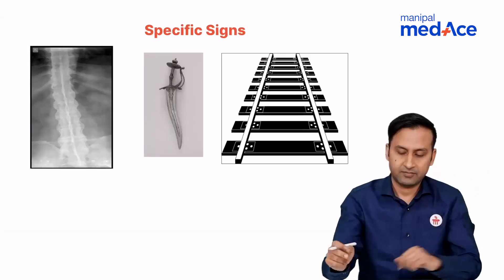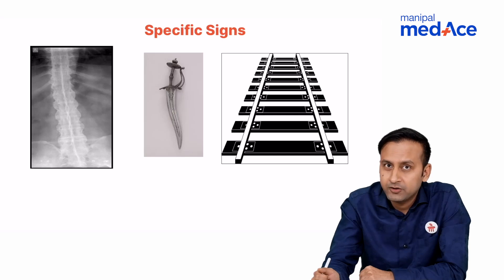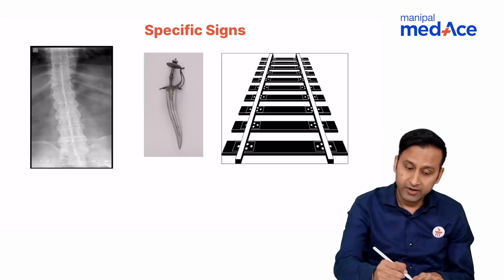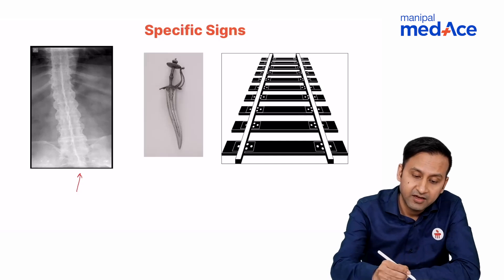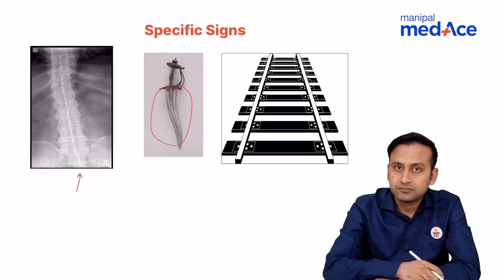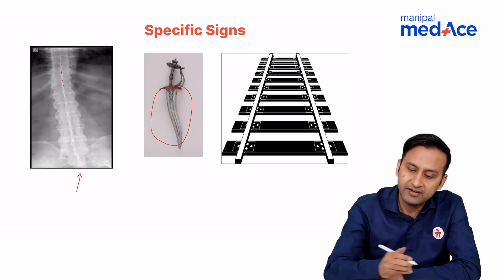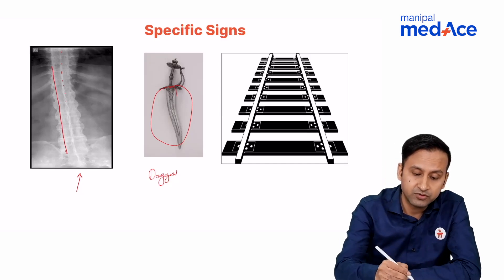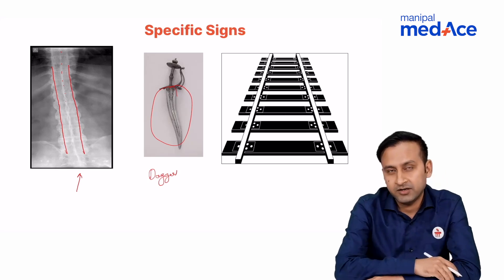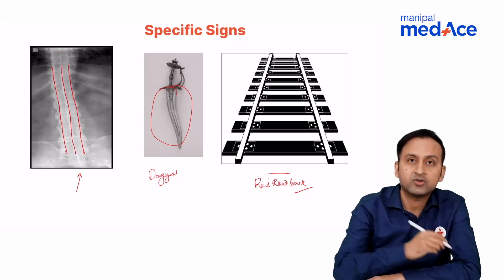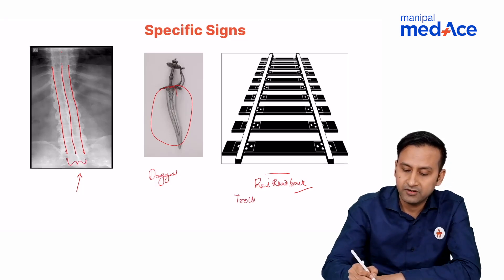Other signs in ankylosing spondylitis include calcification or ossification of the interspinous ligament joining the spinous processes — this gives a dagger-like appearance called the dagger sign. There is also the ligament between the transverse processes on either side; if both intertransverse ligaments get ossified or calcified, they give rise to the railroad track sign.